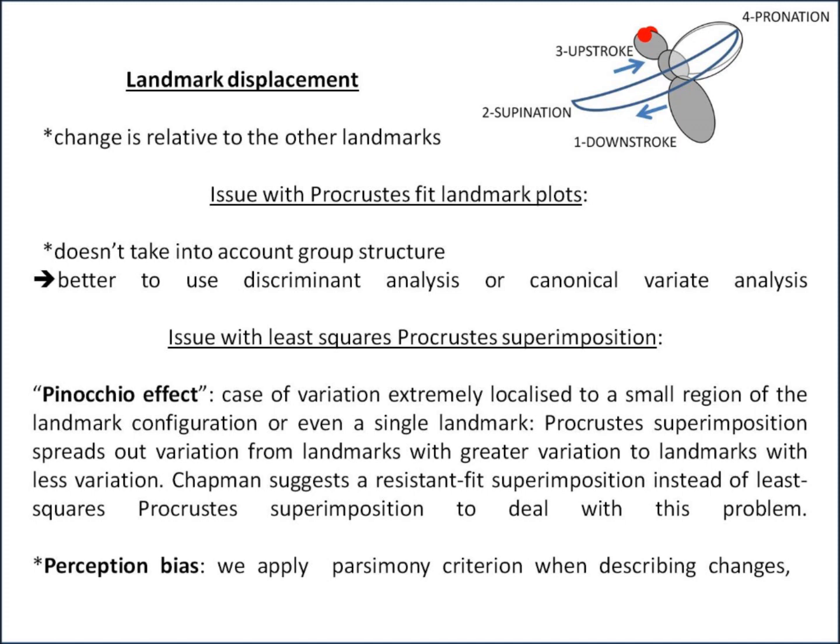An issue with least squares Procrustes superimposition is the Pinocchio effect: where variation is extremely localized to a small region or even a single landmark, the algorithm spreads variation from landmarks with greater variation to those with less. Chapman suggests using a resistant fit superimposition instead to counter this. It can happen, for example, that the distal wing shows greater variation than the wing base, just because variation at any one landmark depends on all other landmarks.